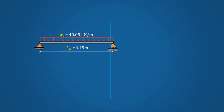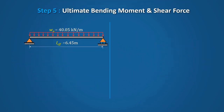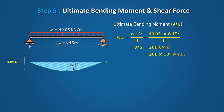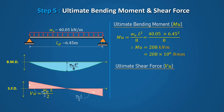In Step 5, compute the ultimate bending moment and ultimate shear force due to design load. The maximum bending moment for a simply supported beam is WL²/8 at mid-span. Putting the values of design load and span, we get MU equal to 208 kNm. The ultimate shear force VU equals WL/2, giving VU equal to 129 kN.